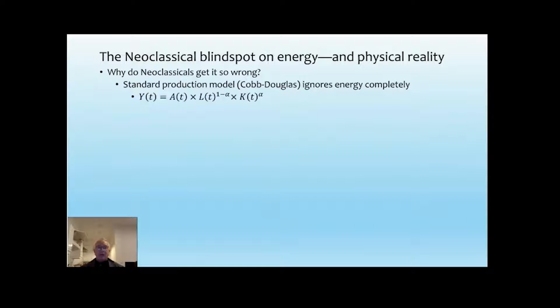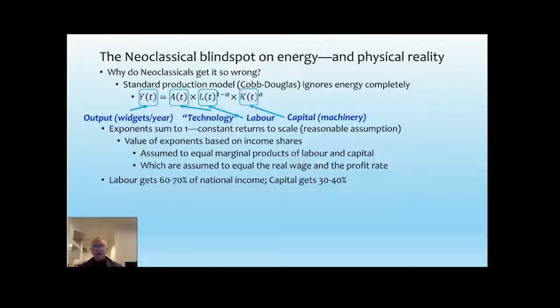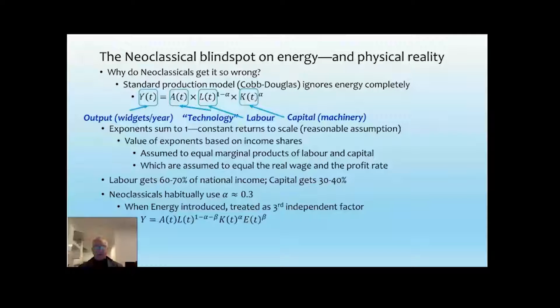So why do they get it so wrong? Well, it's again because the standard production function they use ignores the role of energy completely. Here's your output in widgets per year. There's technology, which is rather ethereal in the neoclassical model. The amount of workers, the amount of machinery, and then the exponents sum to one, which is constant returns to scale, which is a reasonable assumption. And as I showed in the previous lecture, they base the value of the exponents on income shares, which they assume are equal to the marginal products of labour and capital, and therefore equal the real wage and the profit rate. So labour gets 60 to 70%, capital gets 30 to 40%. What neoclassicals habitually use for alpha is a variable value of 0.3. And you'll find that in papers written in 2022.